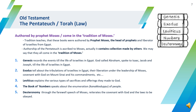Genesis records events like creation, the flood during Noah's time, Abraham, Isaac, Jacob and Joseph, till the life of Israelites in Egypt. Exodus tells about the tribulations of Israelites in Egypt and their liberation under the leadership of Moses. Leviticus explains the various types of sacrifices and offerings made to God. The book of Numbers speaks about the enumeration of people. Deuteronomy, through the farewell speech of Moses, reiterates the covenant with God and the laws to be obeyed.